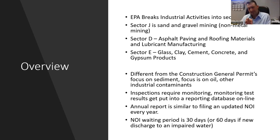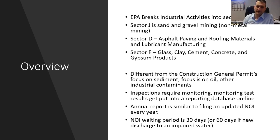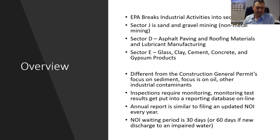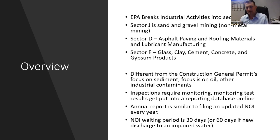The EPA breaks industrial activities into sectors. The sectors I'll talk about most are Sector J, D, and E — which is gravel mining, asphalt batch plants, and concrete batch plants — because most of my clients are contractors who own these facilities. If you're familiar with the construction general permit, this is different. Instead of focusing on sediment, it focuses on oil and industrial contaminants, so it's kind of a shift in mindset to work in the multi-sector general permit field.